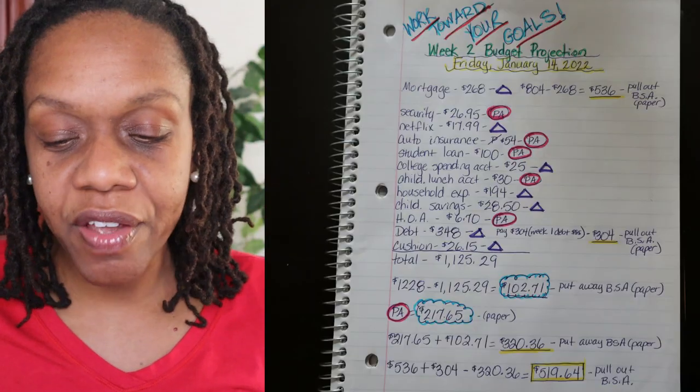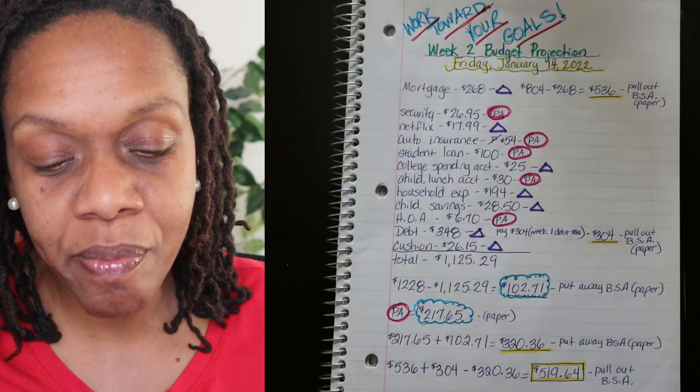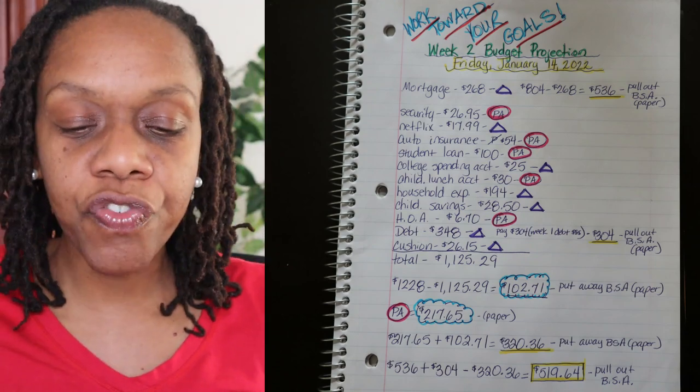Today we're going to be talking about our budget projection for week two of the month of January. Today is Friday January the 14th 2022. It is a Friday therefore I got paid today. I get paid every single Friday and I do a projection of my monies every single week. Projection means I'm going to tell each one of my dollars what to do and where to go and give them a job for the upcoming week. So let's run through these numbers real quick. First off let me project this information up on the screen so you can follow along with me.